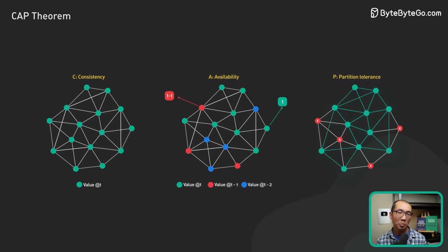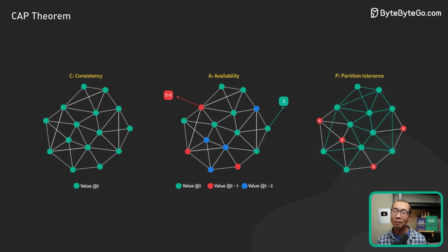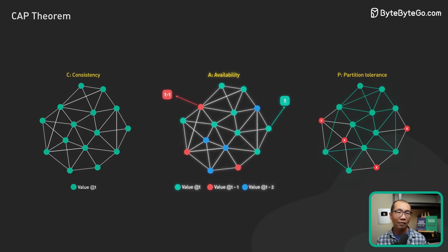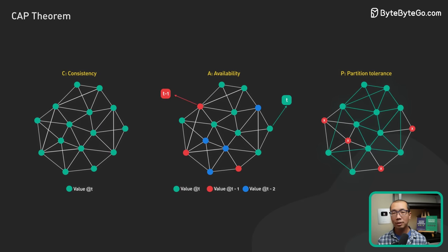The CAP theorem is a concept in computer science that explains the trade-offs between consistency, availability, and partition tolerance in distributed systems.